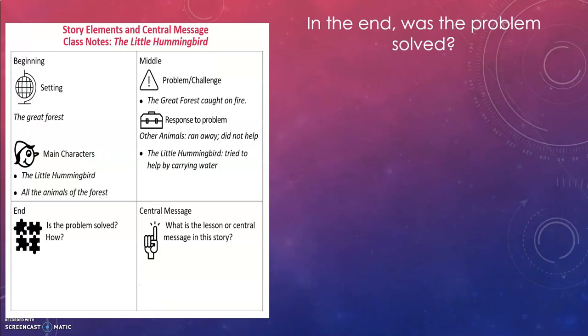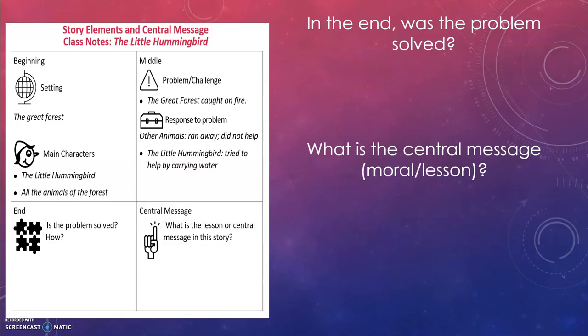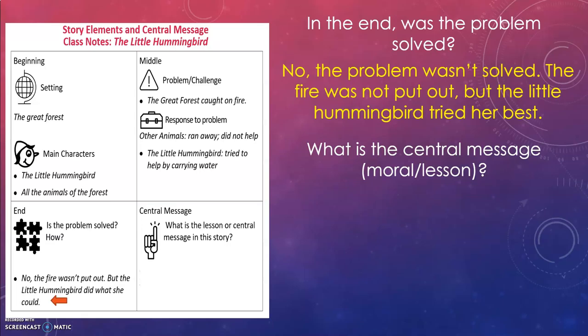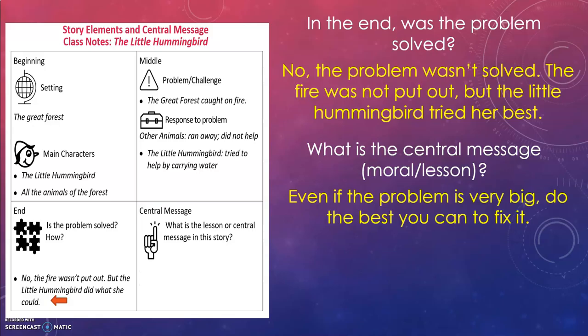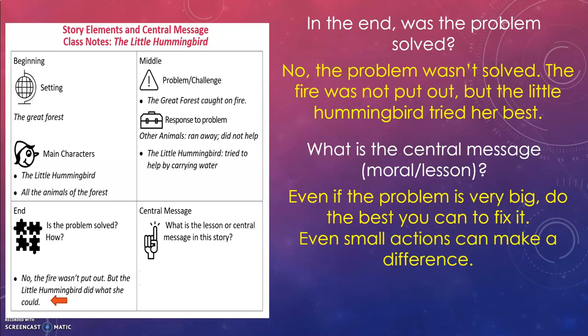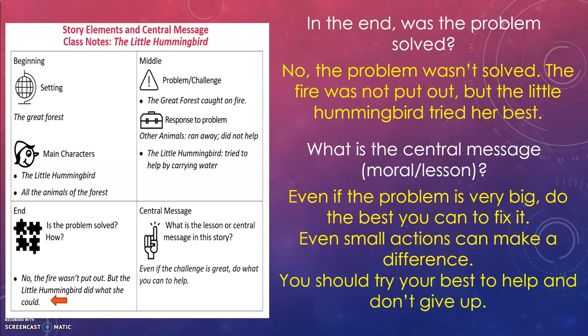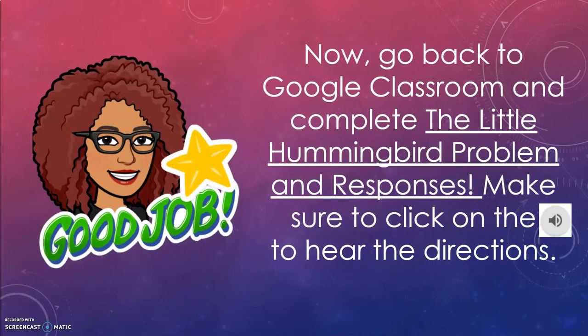Finally, Big Bear said, 'Little Hummingbird, what are you doing?' Little Hummingbird looked at the other animals and said, 'I am doing what I can.' In the end, the problem wasn't solved — the fire was not put out — but the Little Hummingbird tried her best. The central message might be that even if the problem is very big, do the best you can to fix it. Even small actions can make a difference. You should try your best to help and don't give up. Even if the challenge is great, do what you can to help.